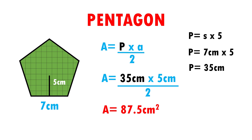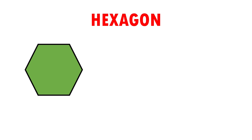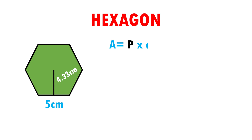Now we are going to see our last example. Here I have a hexagon that measures 5 cm per side and 4.33 cm of apothem. The formula to calculate the area of a hexagon is: area is equal to perimeter times apothem divided by 2.